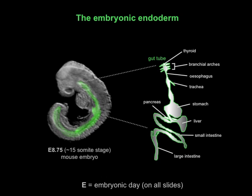The endoderm is the tissue which will give rise to the epithelial lining of the respiratory and digestive tracts and associated organs such as the lungs, liver and pancreas. The endoderm is shown here labelled with GFP. It comprises a tube that runs along much of the anterior-posterior length of the mid-gestational mouse embryo.